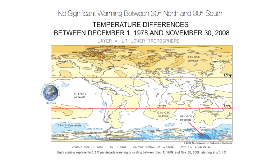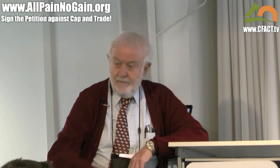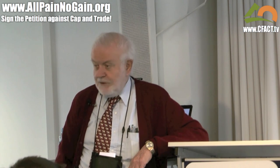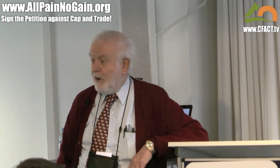Let me show you another example — this comes from satellites. Every climate model predicts that the polar regions should warm more than the equator. While this is true for the north polar region, which has warmed in the last 30 years, the Antarctic has been cooling steadily and it's still cooling — not warming as the models predict.